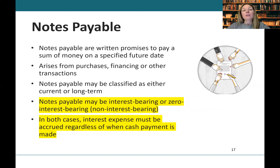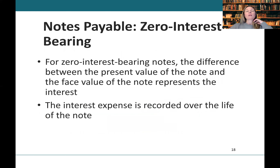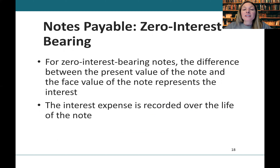Notes payable are written promises to pay a sum of money on a specific future date, and they often arise from purchases or financing transactions. They may be classified as either current or long-term, dependent on their due date, and can be interest-bearing or zero interest-bearing. Regardless of whether the note has explicit interest or not, interest expense must be accrued as at the date of the statement of financial position. For zero interest-bearing notes, the difference between the present value of the note and the face value represents the interest, and interest expense is recorded over the life of the note.